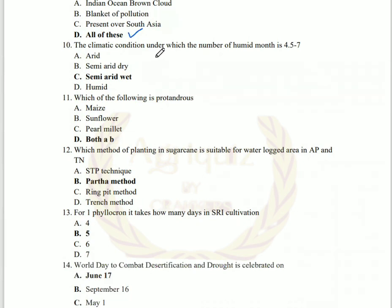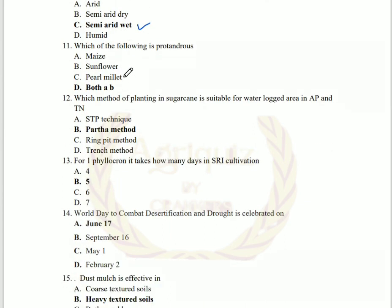The climatic condition under which the number of humid months is 4.5 to 7 is known as semi-arid wet. Less than 2 months is arid. 2 to 4.5 months is semi-arid. 4.5 to 7 is semi-arid wet. More than 7 months is known as humid.